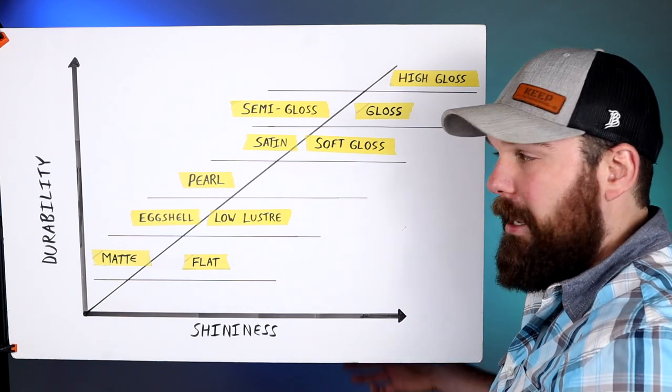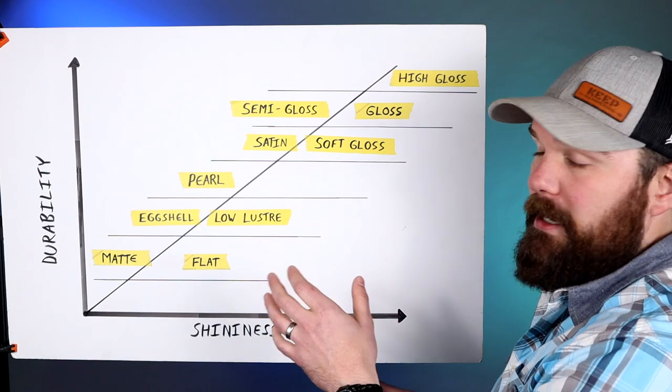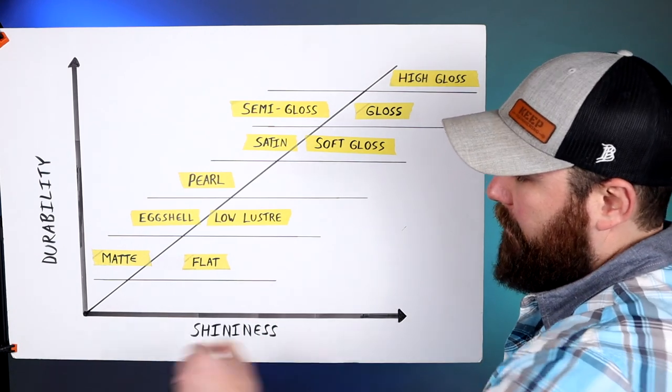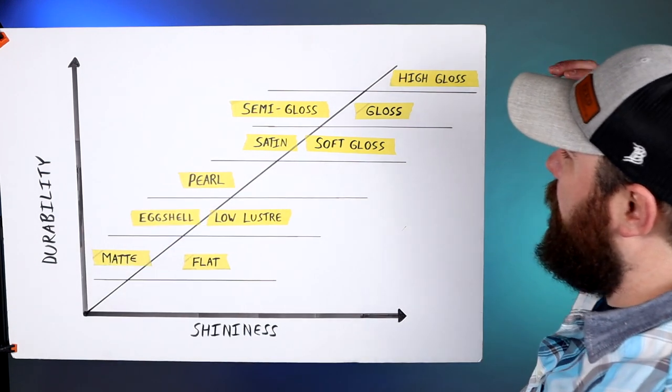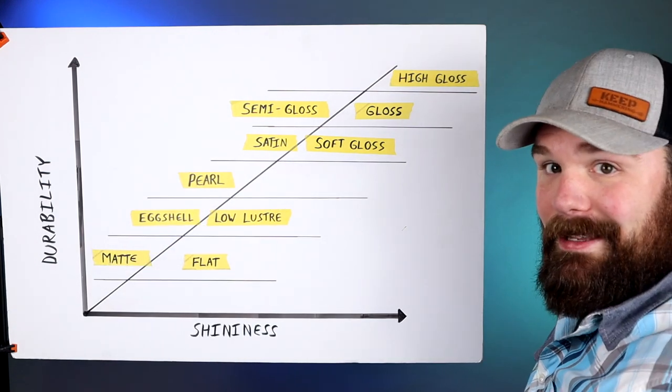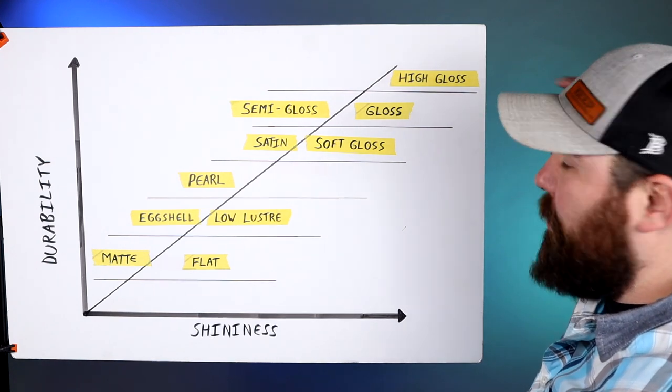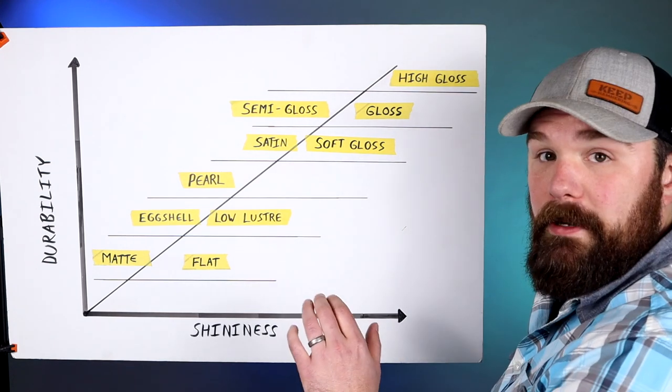They mean the exact same thing and they just denote the level of sheen in a particular paint. And in general, the shinier the paint, the more durable it is. So up here you have high gloss which has the most sheen you can possibly cram into a product, super super shiny, also extremely durable.